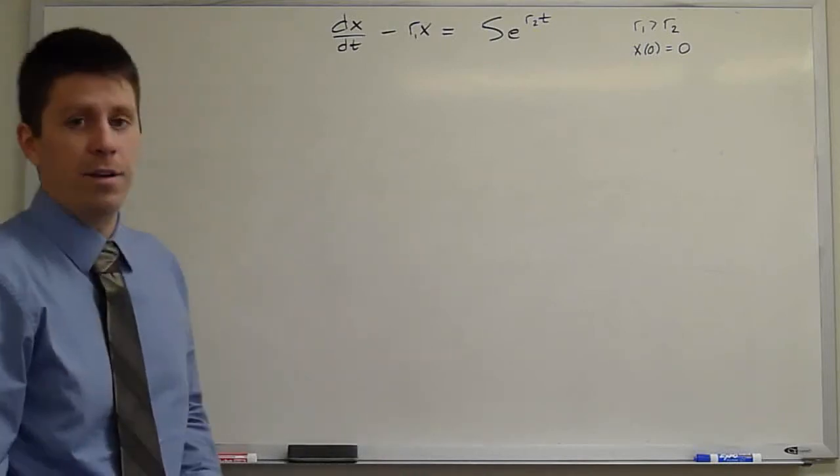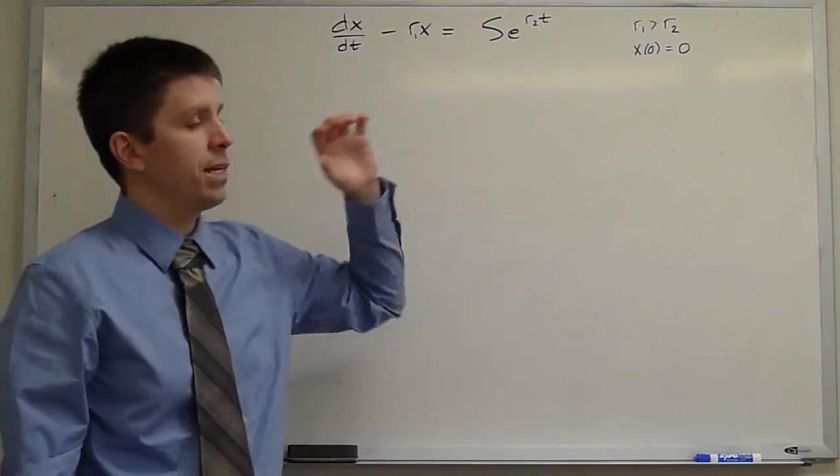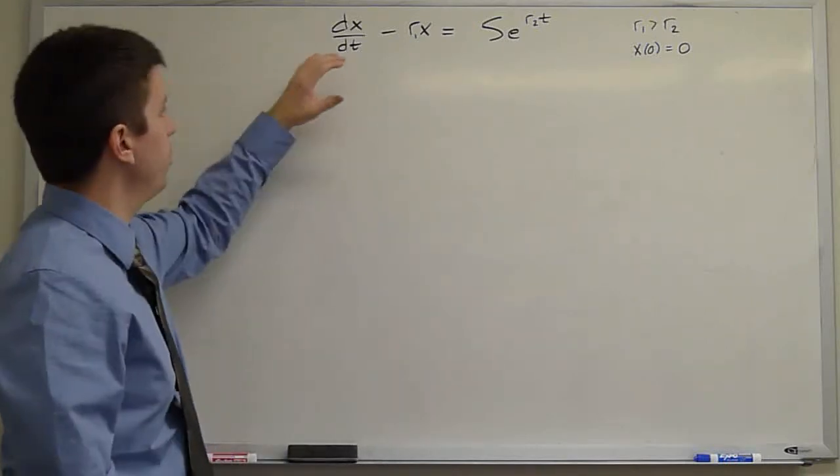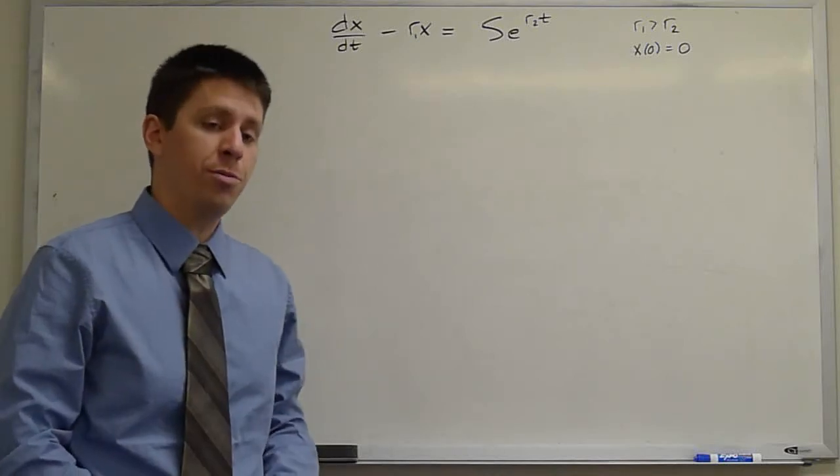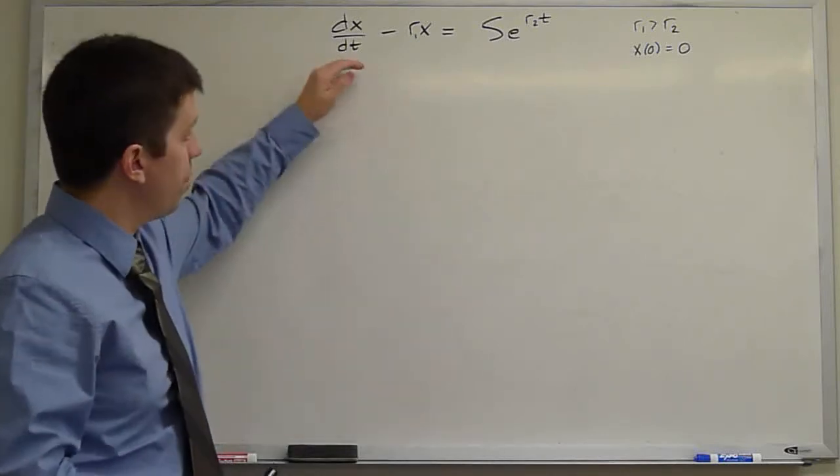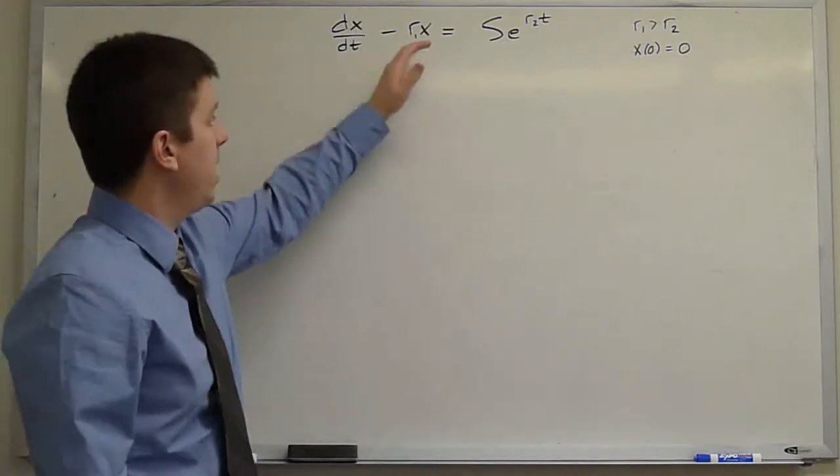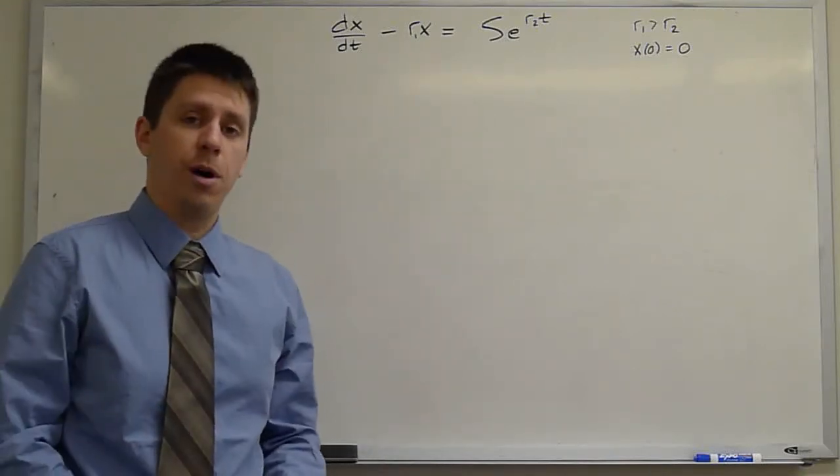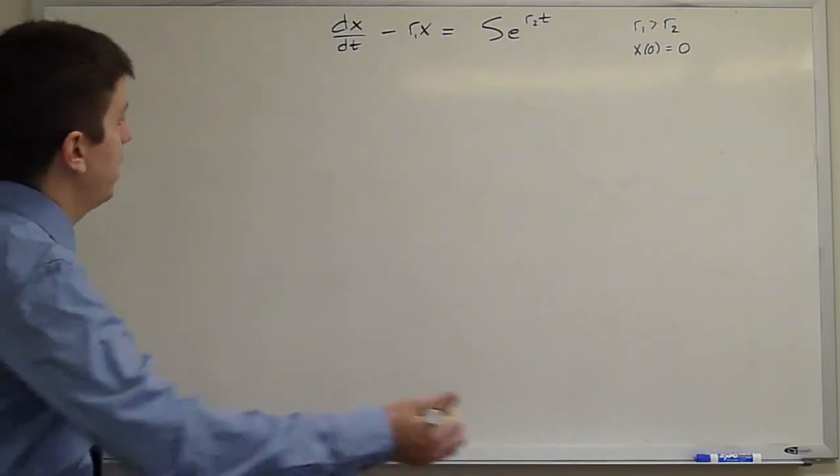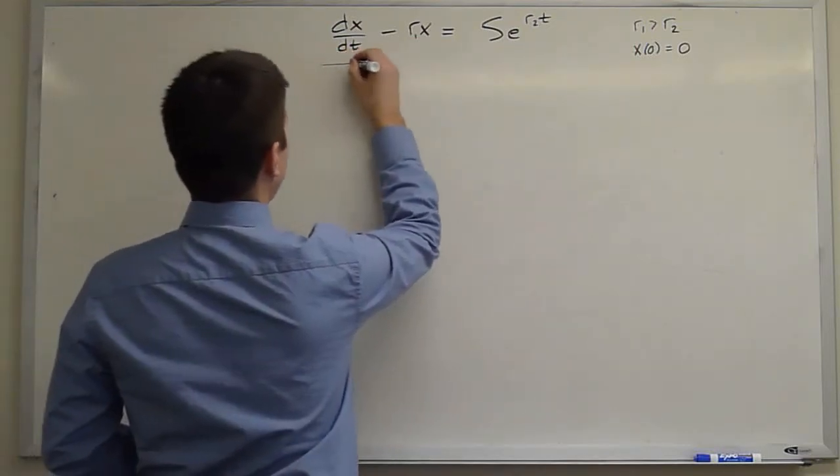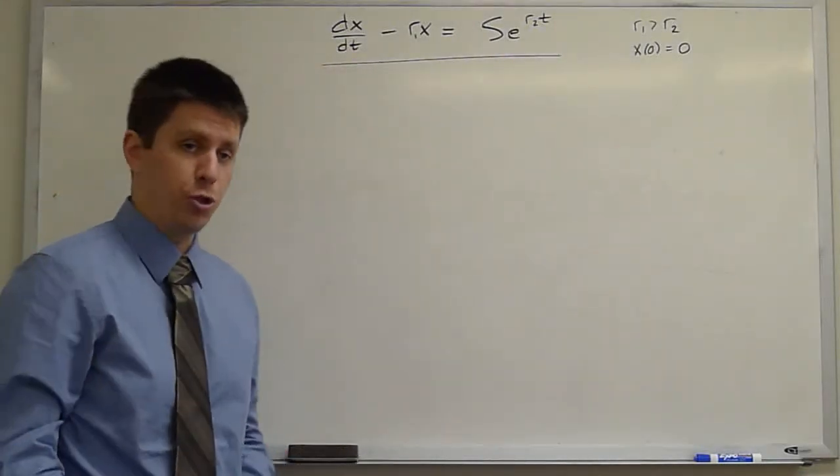The idea behind the method of undetermined coefficients is that if my forcing is a simple exponential, I can probably just assume that my particular solution is also some sort of exponential of that form. Because when I take a derivative of the exponential, I just get the same exponential times some constant. And x is also just some constant minus R1 times my guess. As I mentioned in class, undetermined coefficients is a way of finding the particular solution.